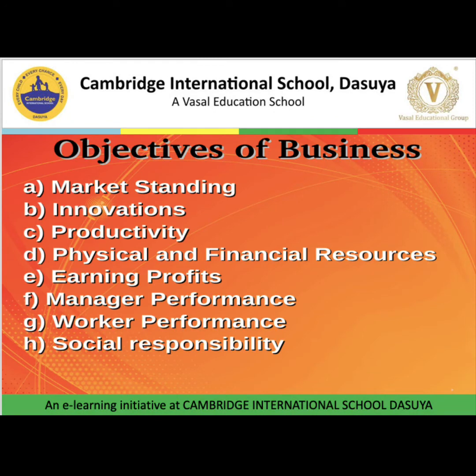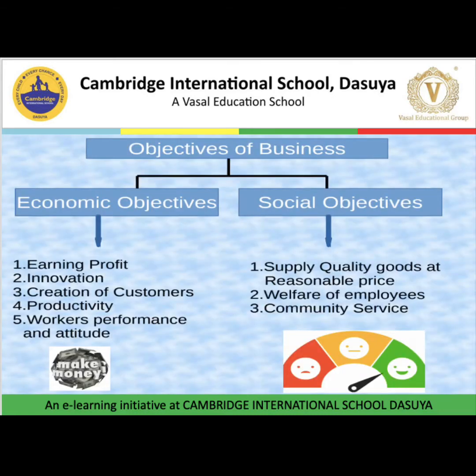In our daily life, we set targets or aims, and businesses also set objectives according to the nature and size of business. These objectives can be market standing, innovations, productivity, physical and financial resources, earning profit, manager performance, worker performance, social responsibility, etc. These objectives we can classify into two categories: economic objectives and social objectives.